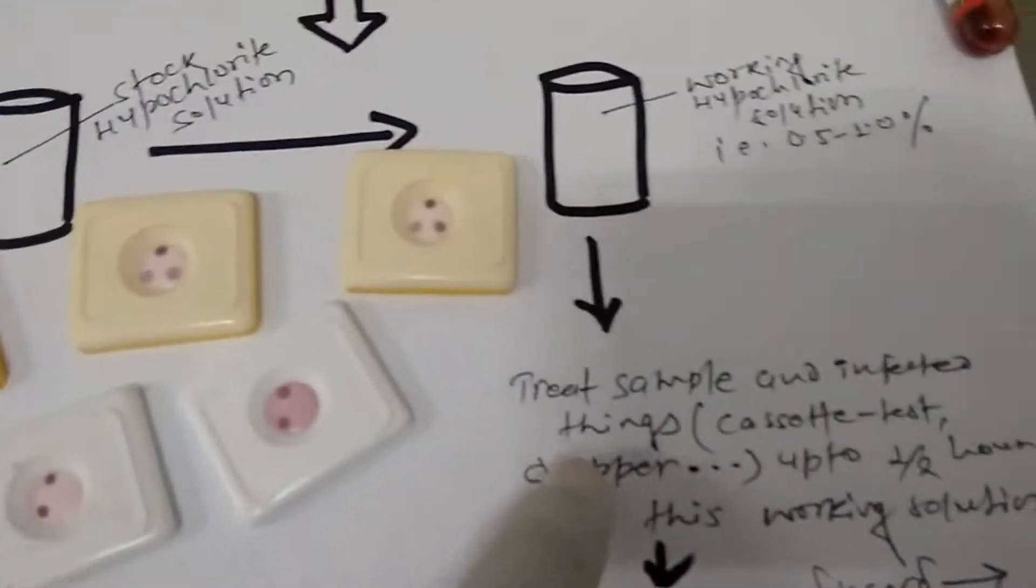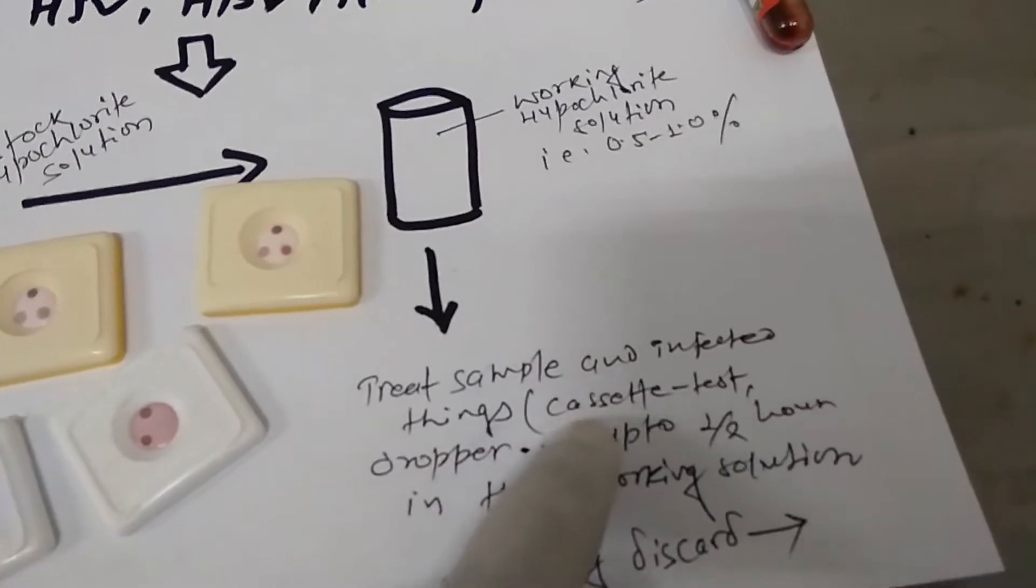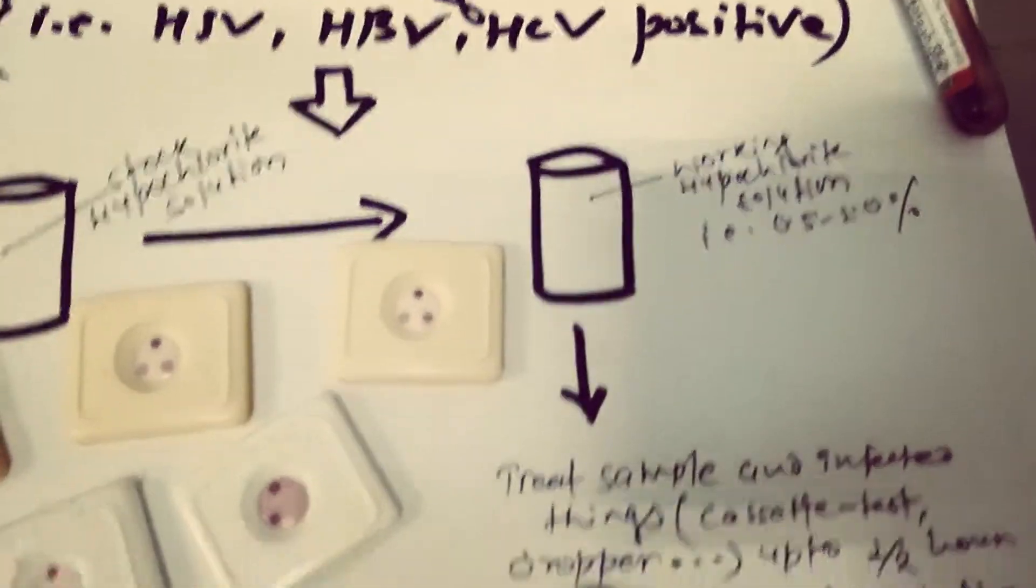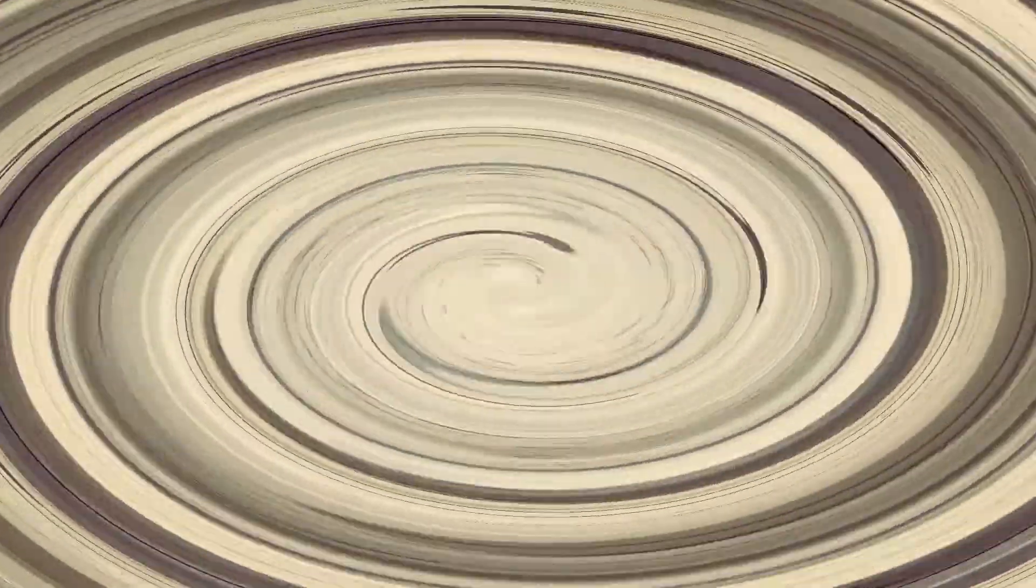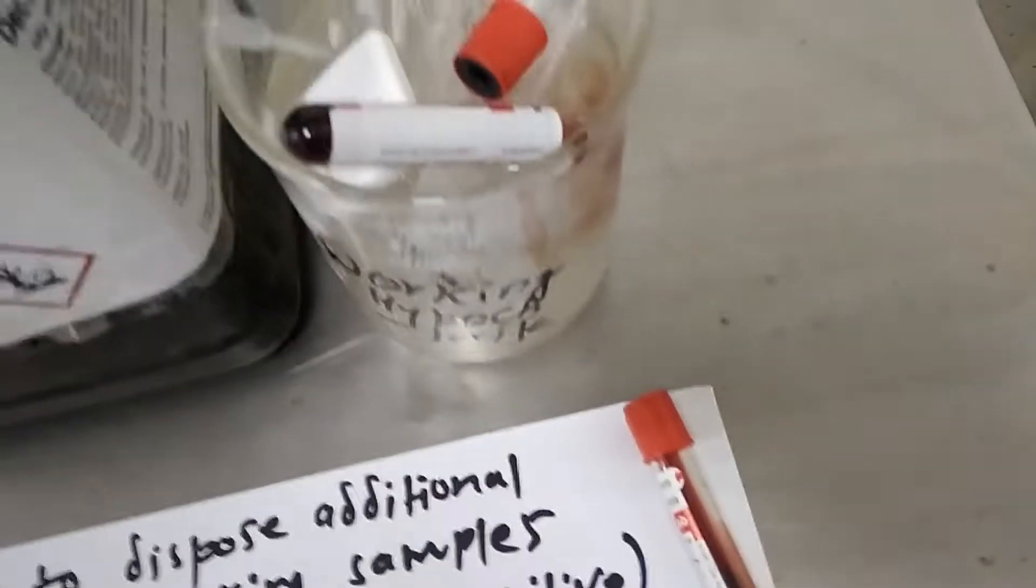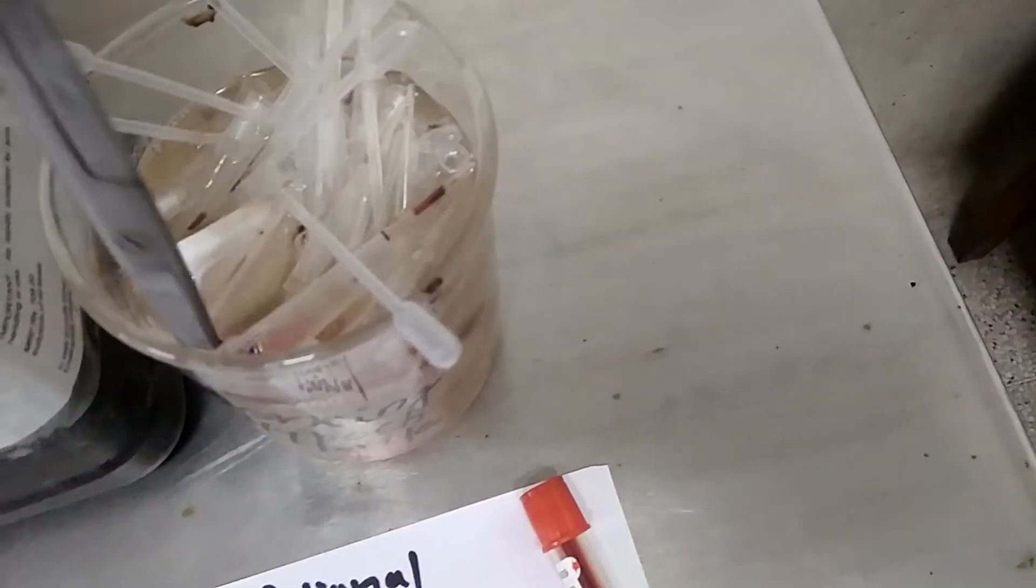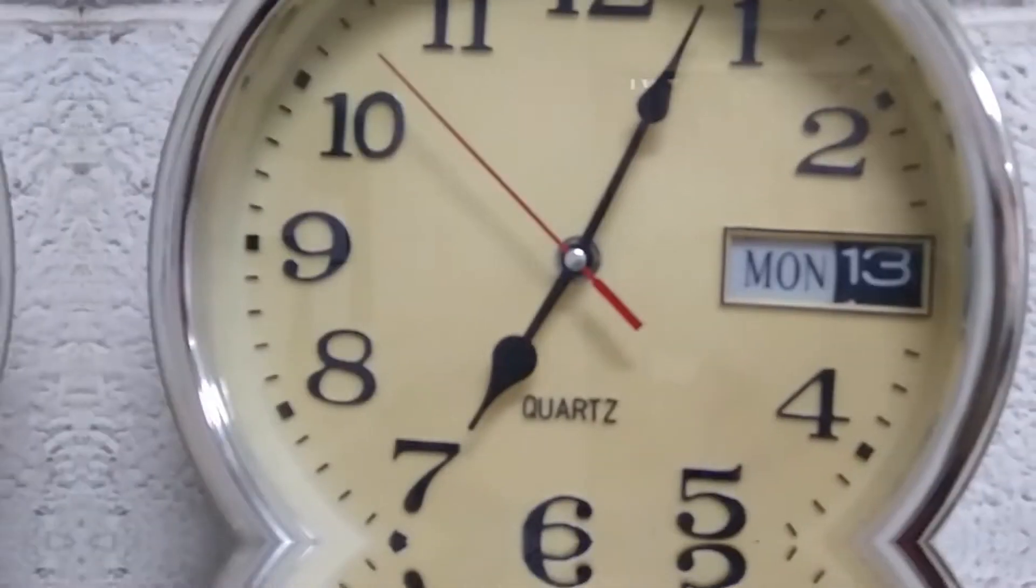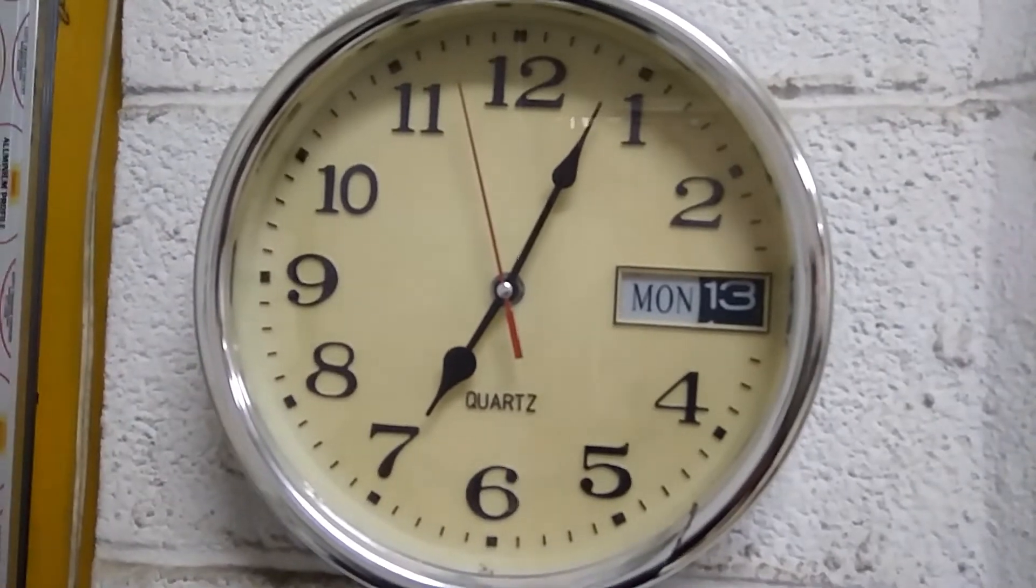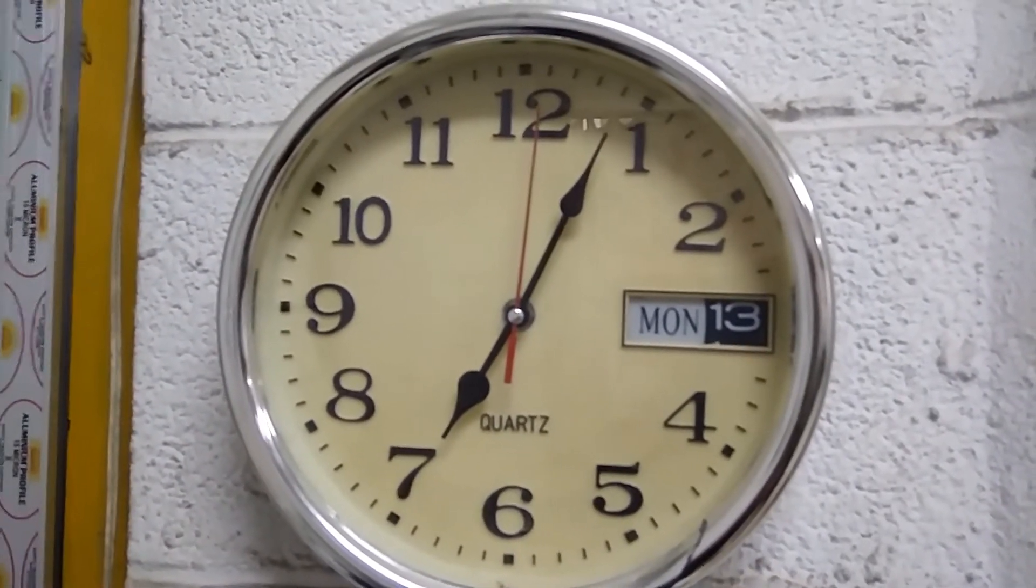One thing we have to remember - that according to quantity of contaminated material we can use top of jar or bucket. And here low load, that is why we have used top of jar for making working hypochlorite solution. Treat all the infected materials with this solution for half an hour, then finally discard according to waste disposing guidelines.